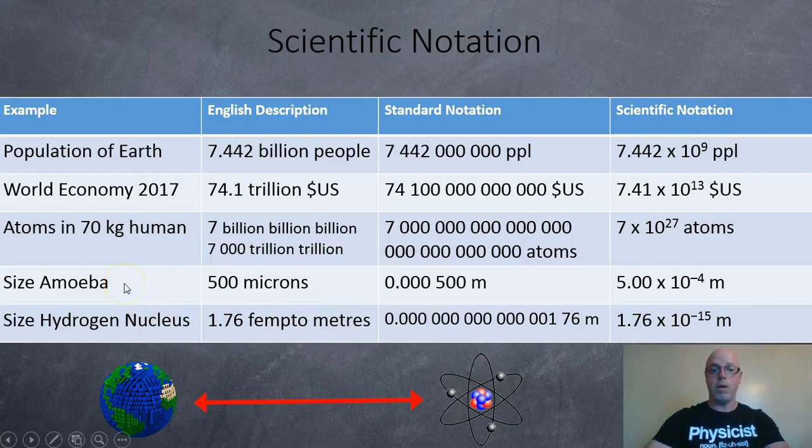The size of an amoeba, so these little things that live in water. Around 500 microns across, or 0.000500 meters. So for that one, we're going to move the decimal to the right. So that's 3 jumps, 4 jumps all together. 5.00 times 10 to the negative 4 meters.